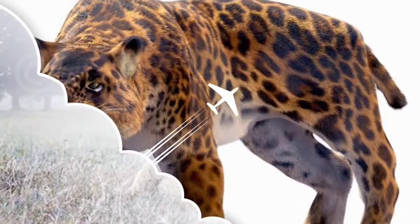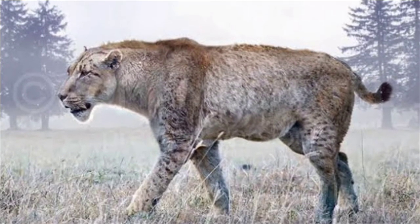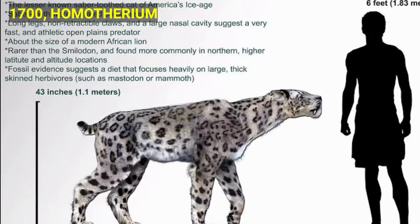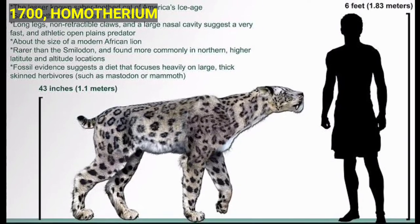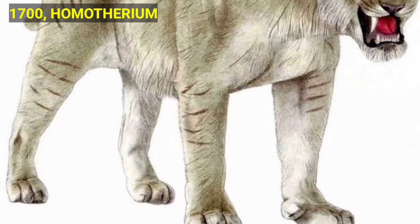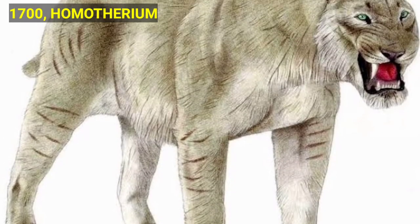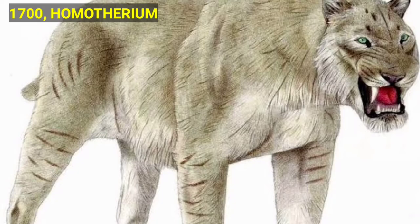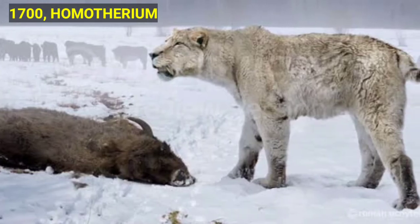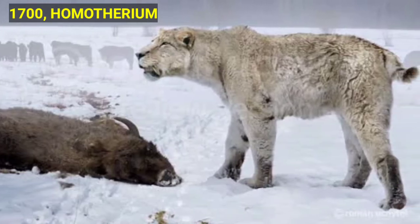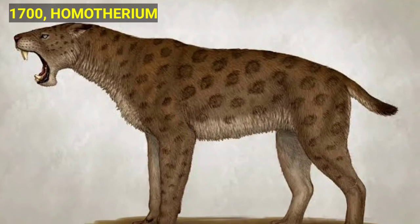Homotherium is an extinct ancestor of modern-day felines and is commonly known as the scimitar cat. The last scimitar cats were in North America 10,000 years ago. They can be found in North America, South America, Europe, Asia and Africa.